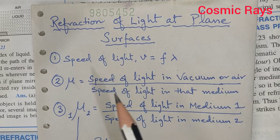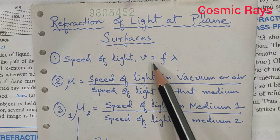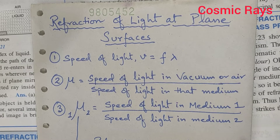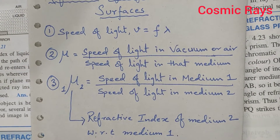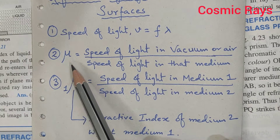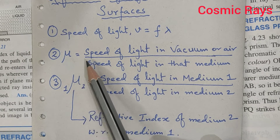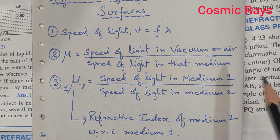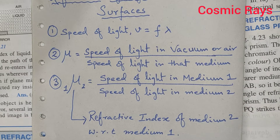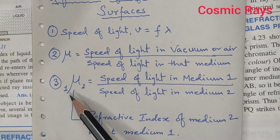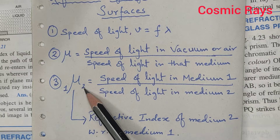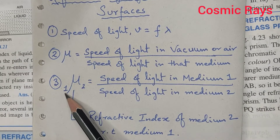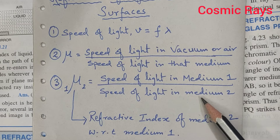First of all, we will be using the speed of light: v is equal to frequency multiplied by wavelength. We might not need this formula but we are supposed to know. Then the second formula is about the refractive index, which is denoted as mu. Refractive index is equal to speed of light in vacuum or air divided by the speed of light in that medium, for whichever medium we have to find out. Refractive index of medium 2 with respect to medium 1 is speed of light in medium 1 divided by speed of light in medium 2.